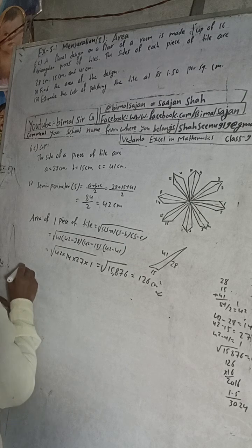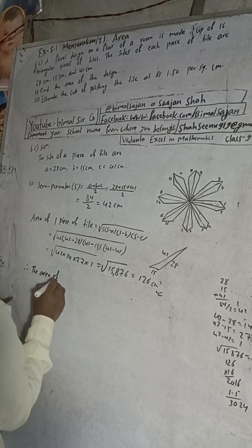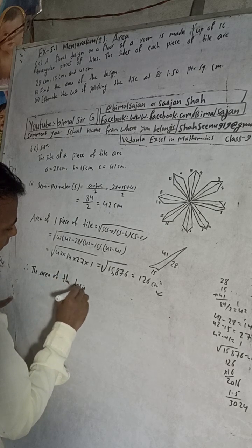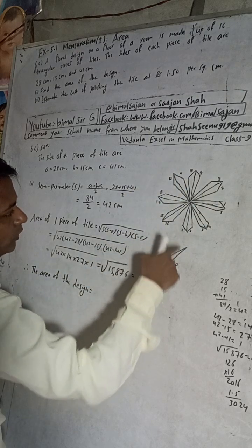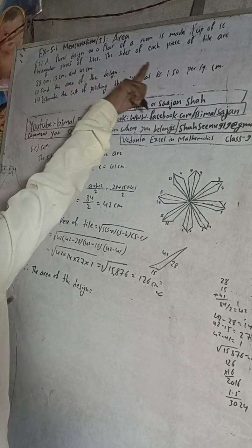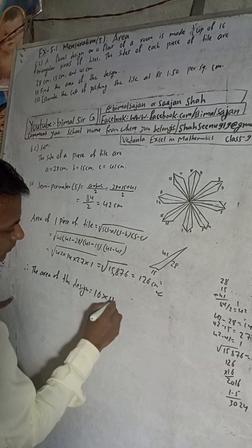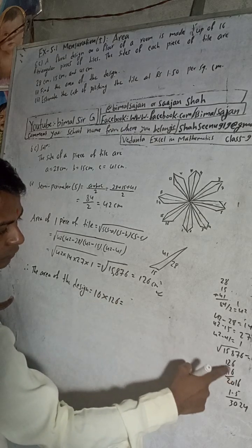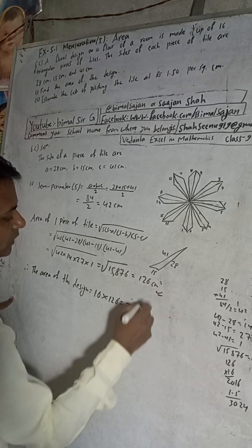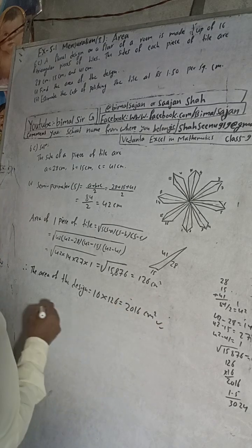Find the area of the design. Therefore, the area of the design, for one piece this is 126, so there are total 16 pieces are there. A floral design is made up of 16, so 16 into 126, we got 2016, and this area also centimeter square. We got number one answer.